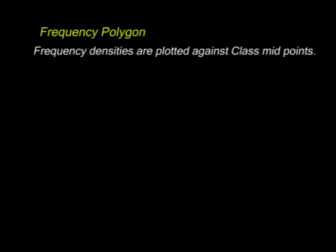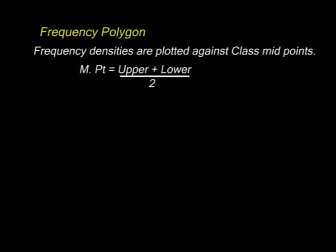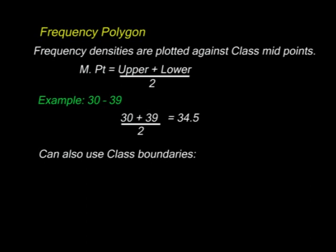The next type of data presentation is use of frequency polygons. This is a graph in which the frequency densities are plotted against the class midpoint. A class midpoint is given by the upper plus the lower class boundaries divided by 2. In the class 30 to 39, the midpoint is 30 plus 39 over 2, which gives 34.5. You can also use the class boundaries — in the same class, 29.5 plus 39.5 divided by 2 also gives 34.5.